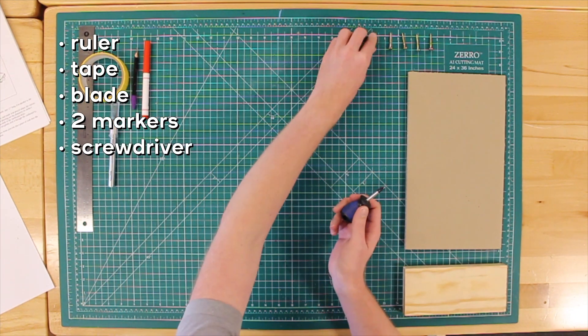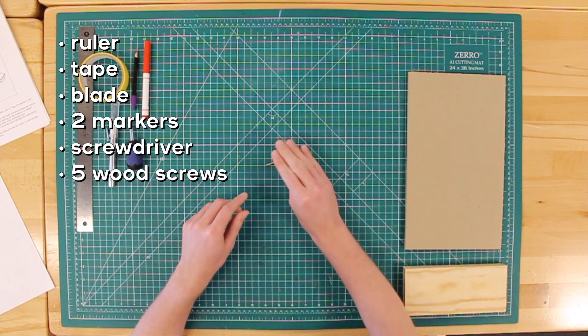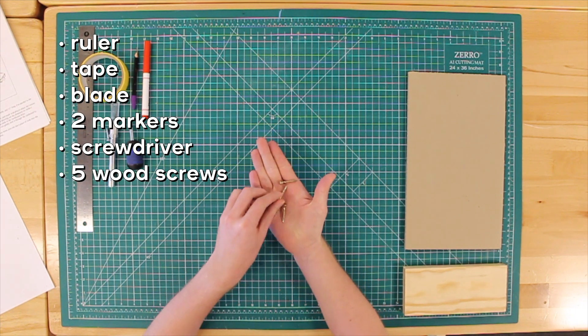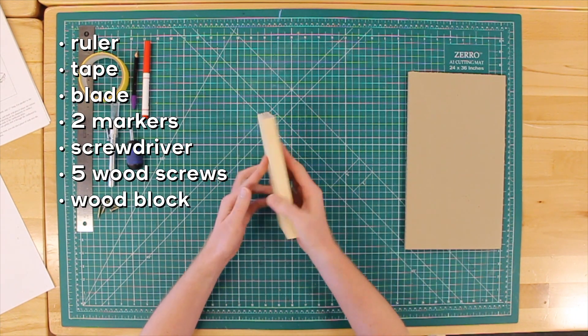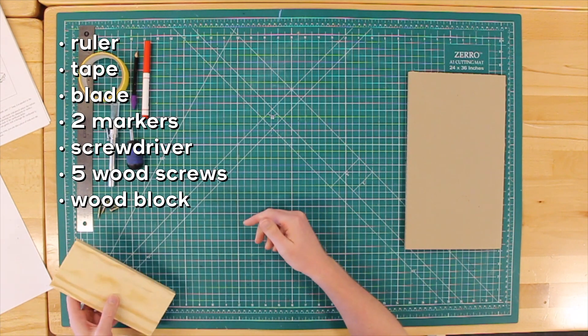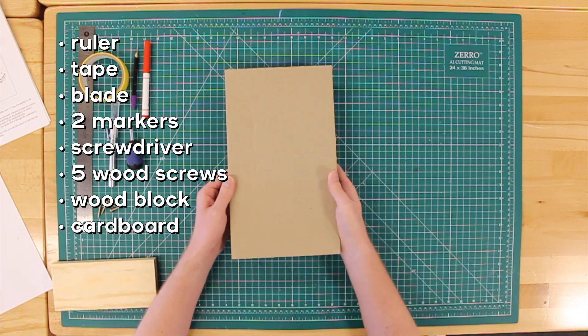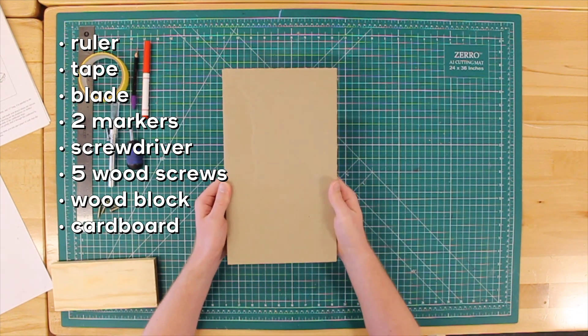A screwdriver and a wood screw that fits it, four wood screws or thumbtacks, a scrap wood block, and some scrap cardboard that's at least six by thirteen inches.